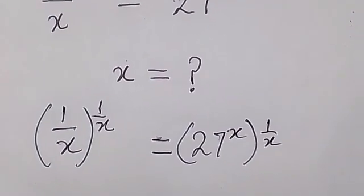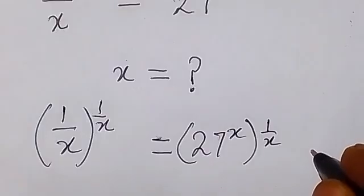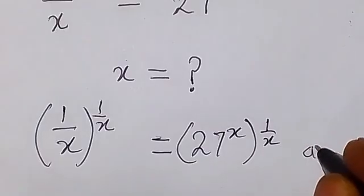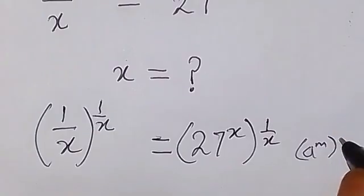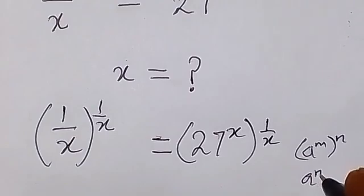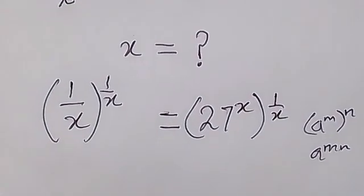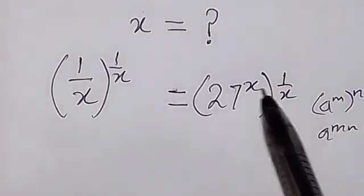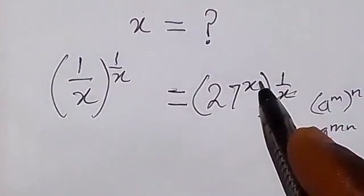So it's one of the law of indices. And that law is simply when we have a raised to power m and we are raising it times n, we can simply write it as a raised to power mn. So from there now we can see that this power multiply and x here will cancel x here.